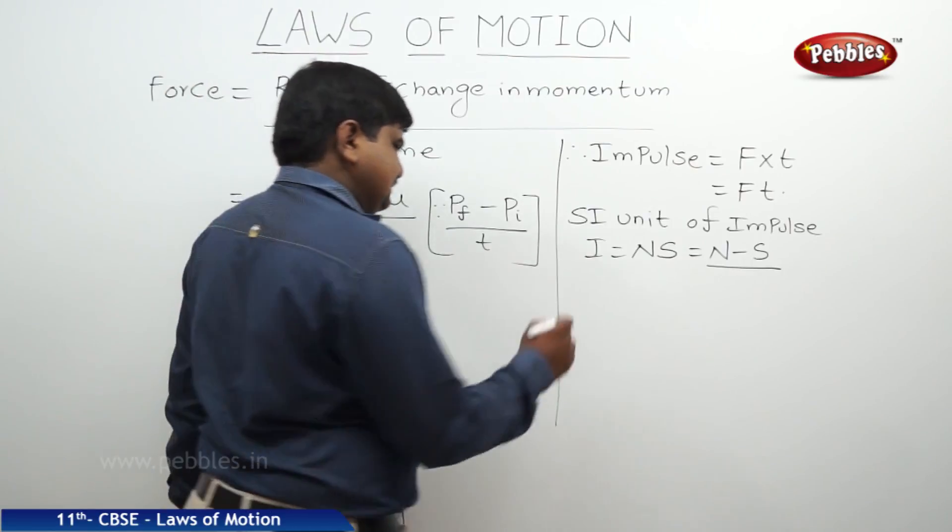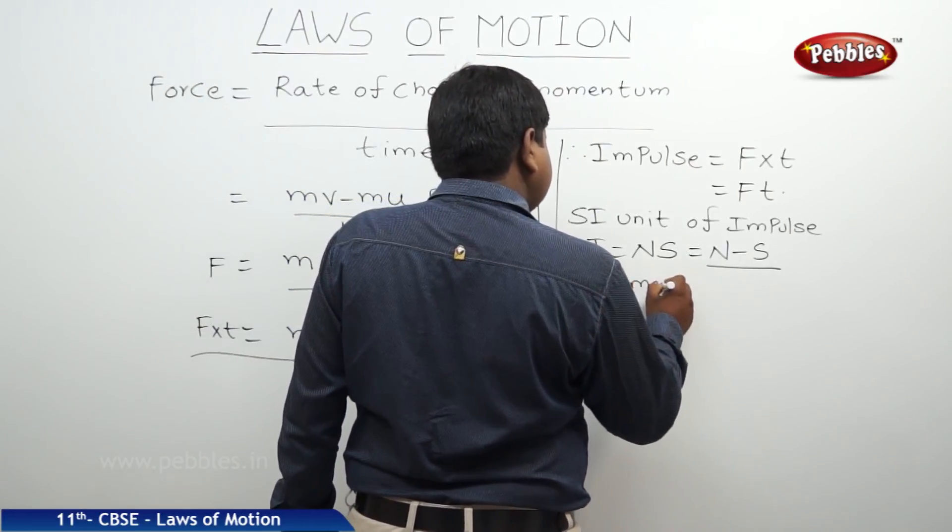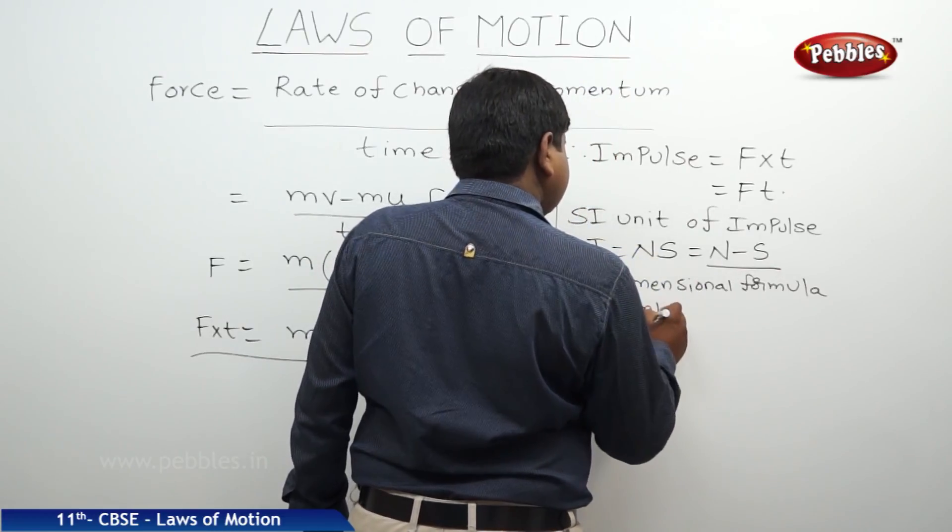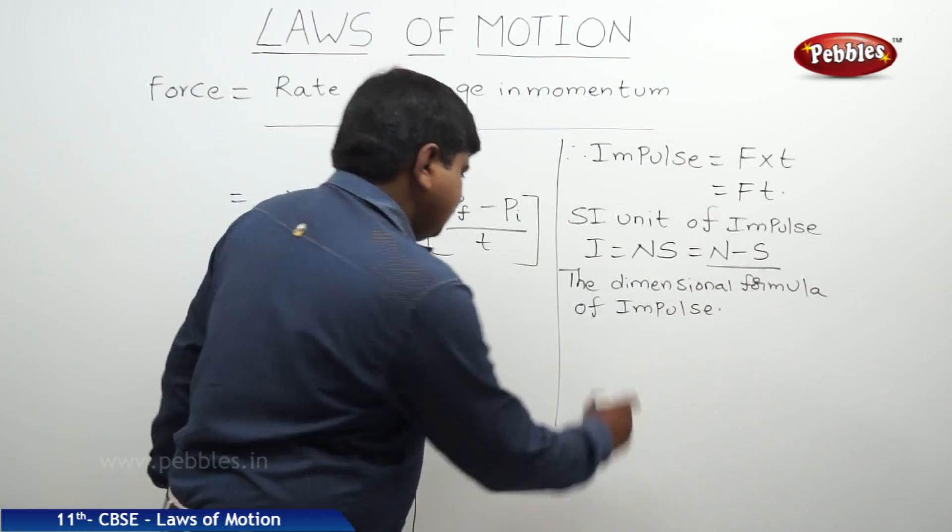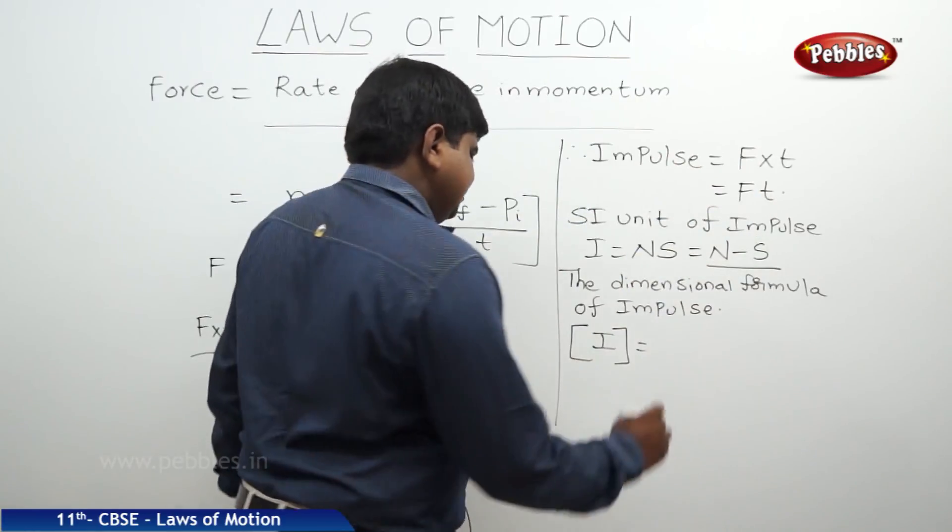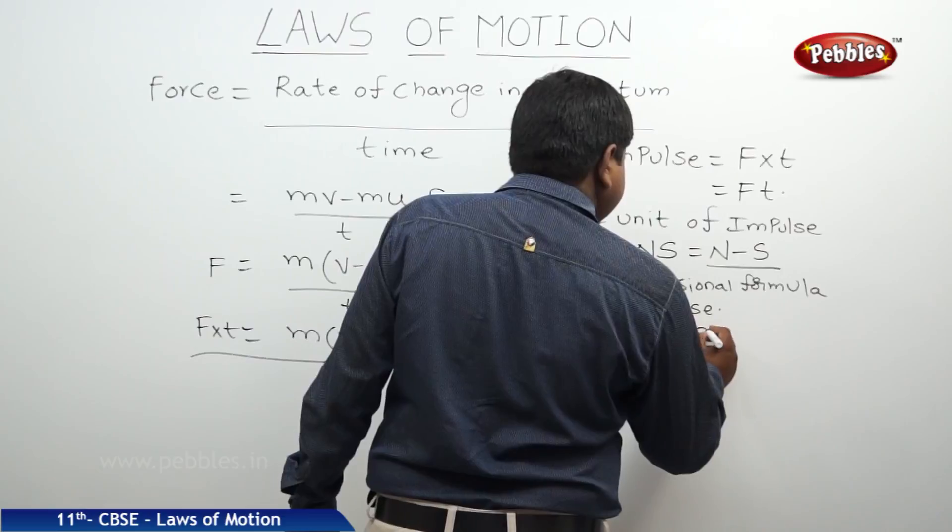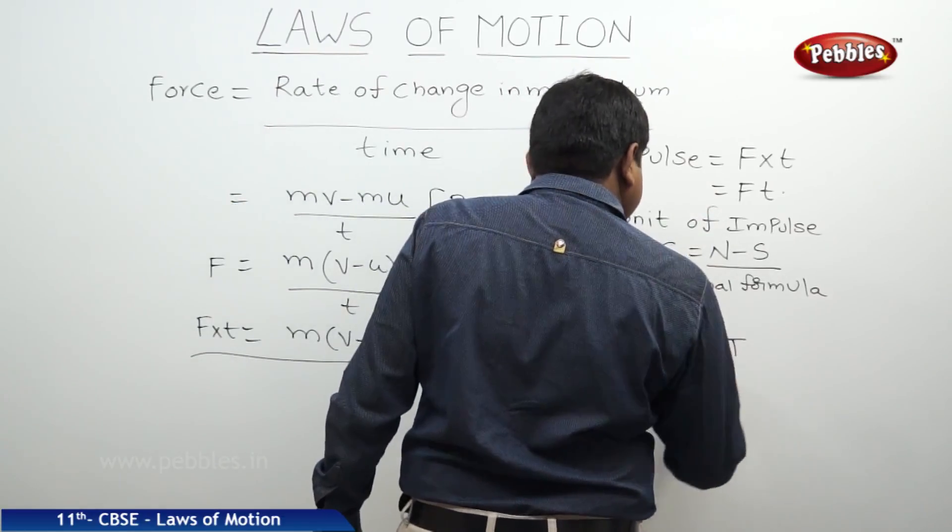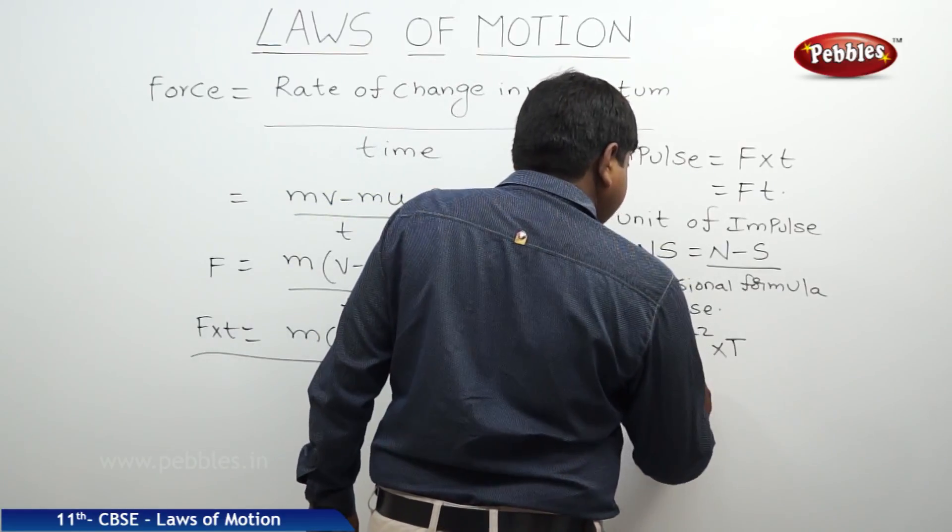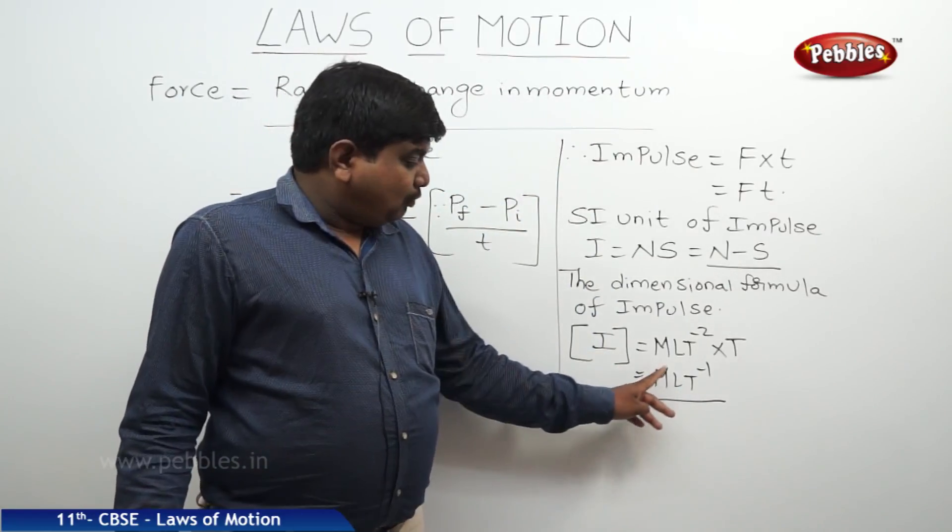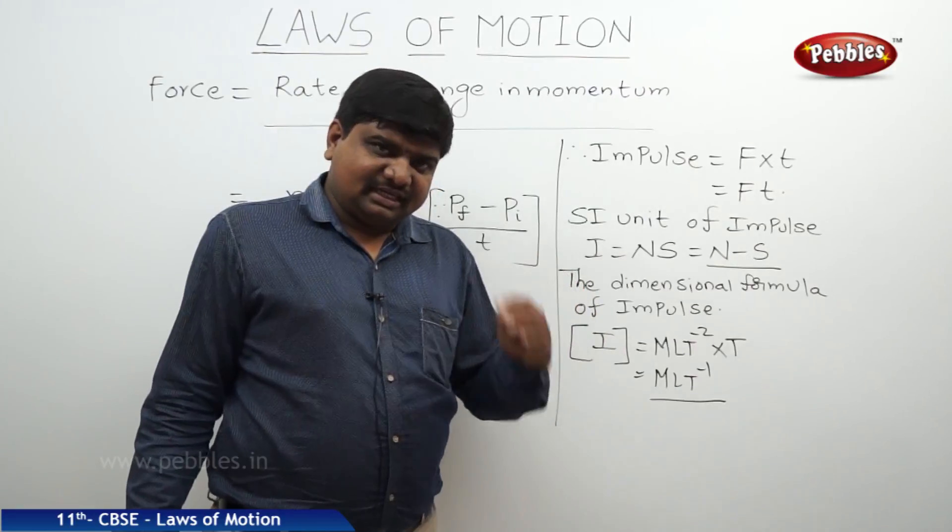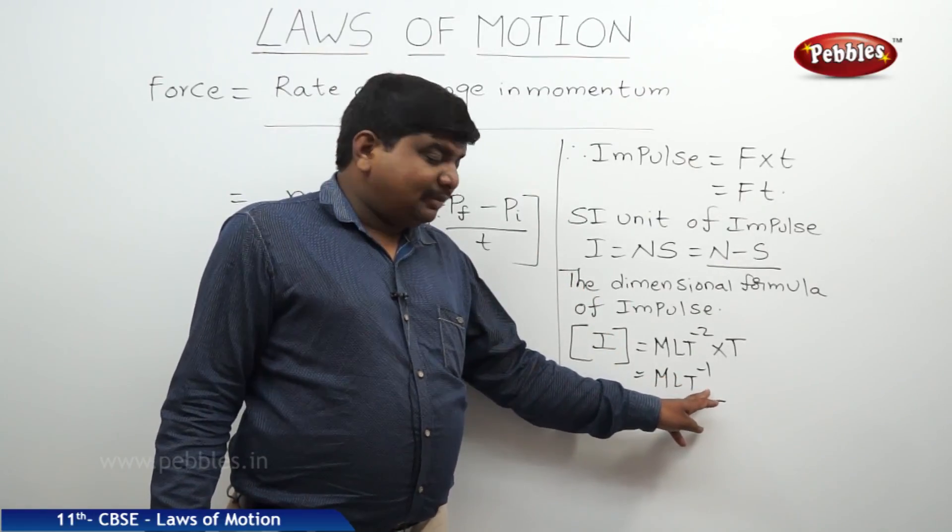The dimensional formula of the impulse: it can be derived like this. We should keep the I in brackets. The dimensional formula of force is MLT to the power minus 2, into the dimensional formula of time, which is capital T. So this is the dimensional formula of force; this capital T is the dimensional symbol of time. So it will be MLT to the power minus 1. Impulse has one dimension in mass, one dimension in length, and minus 1 dimensions in time. It is dependent on mass, length, and time of the body, which are primarily said to be fundamental physical quantities.